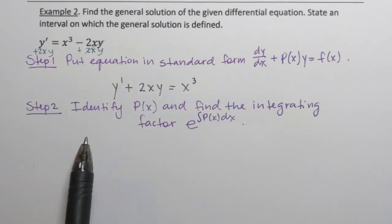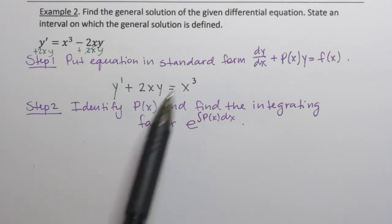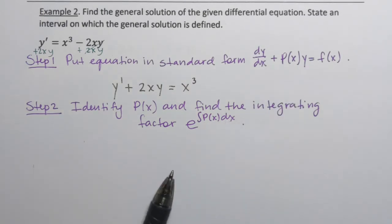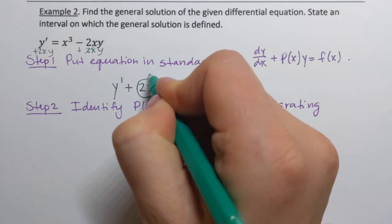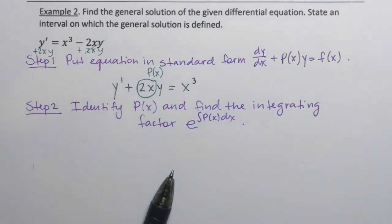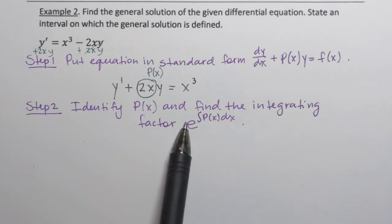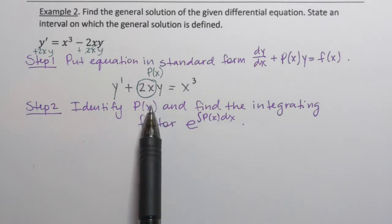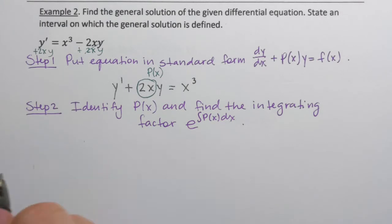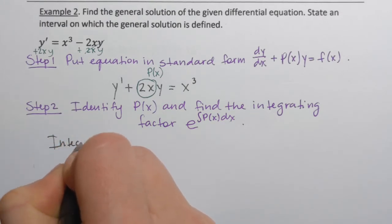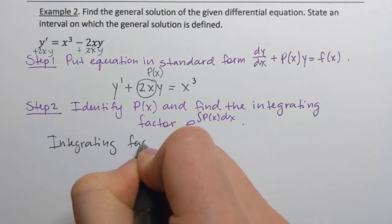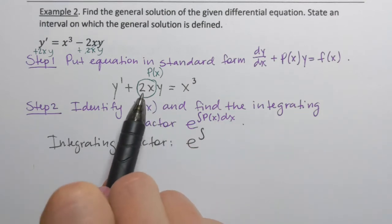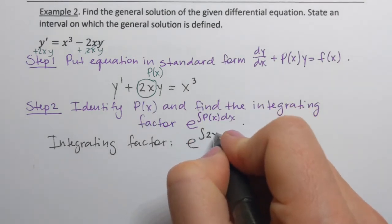Step two: we need to identify p of x. p of x is the coefficient of y when the equation is in standard form. In this case p of x is 2x. Then we need to find the integrating factor, which is e raised to the power of the integral of p of x. So the integrating factor is e to the power of the integral of 2x dx.